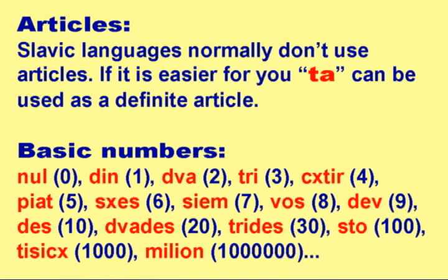Articles: Slavic languages normally don't use articles. If it is easier for you, 'TA' can be used as a definite article.